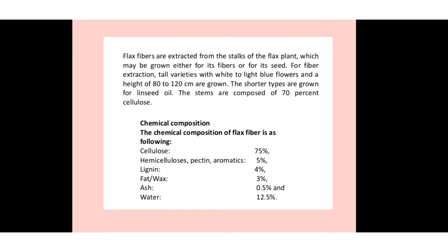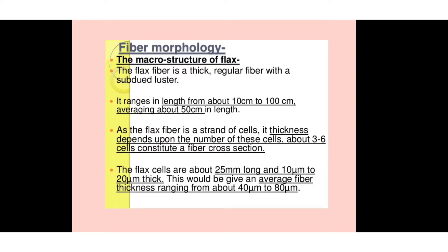The stem is composed of about 70% cellulose. The chemical composition of flax fiber is: cellulose 75%, hemicellulose and pectin 5%, lignin 4%, fat and wax 3%, ash 4.5%, and water 12.5%.